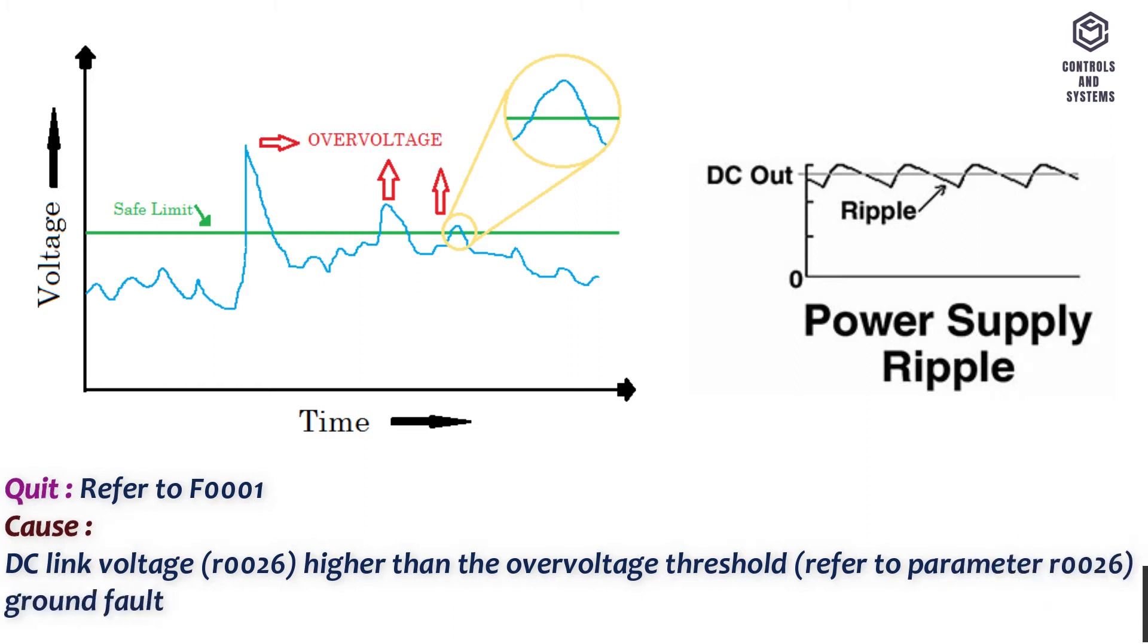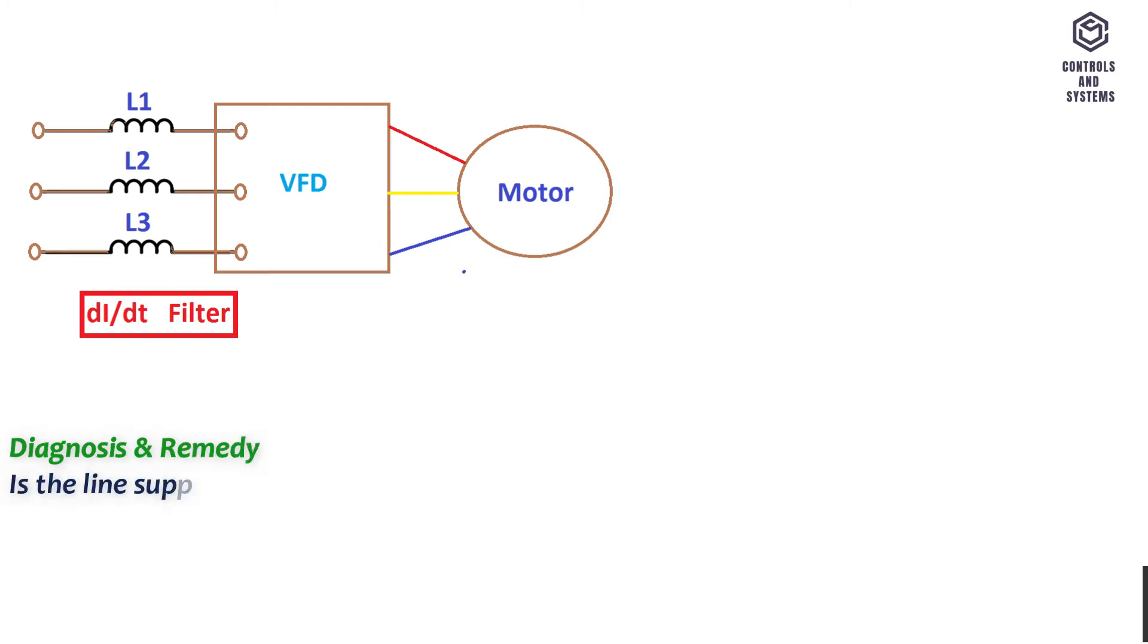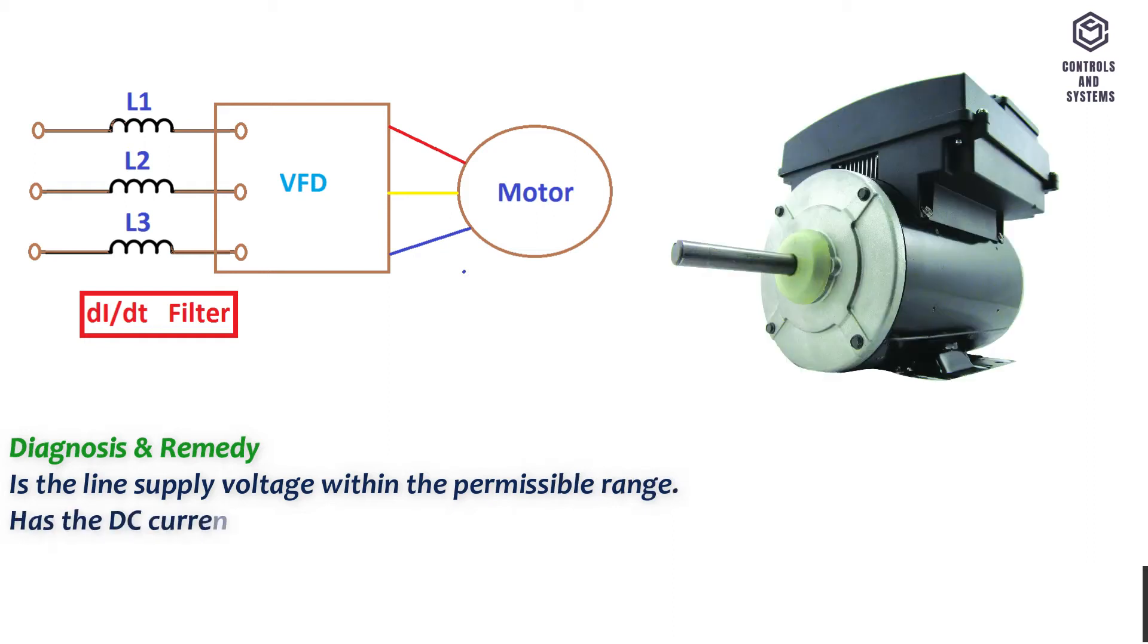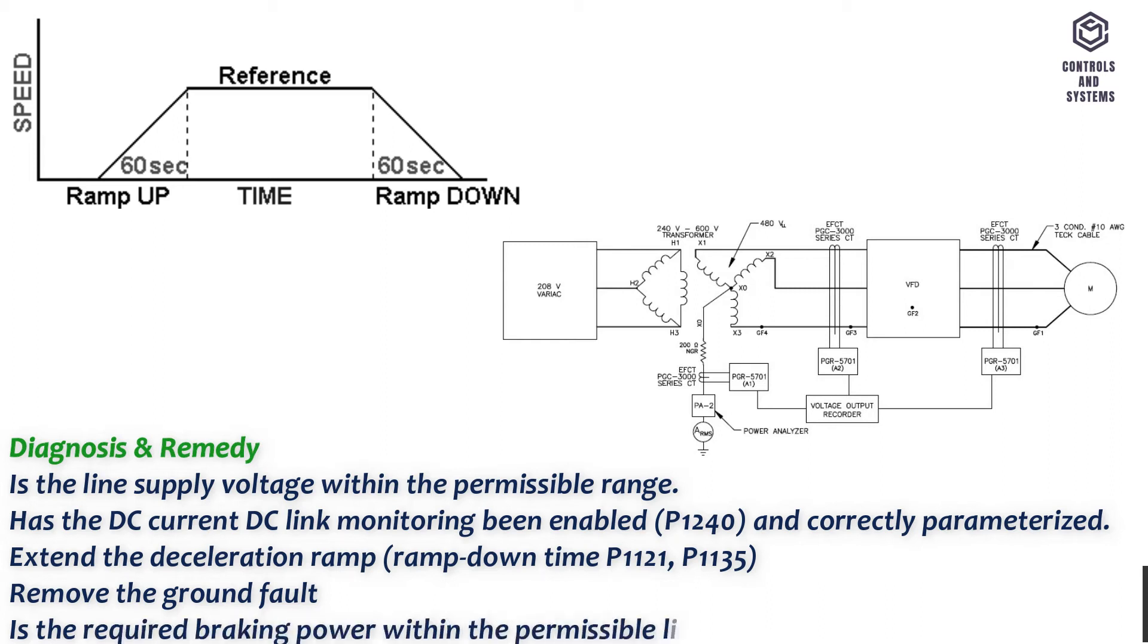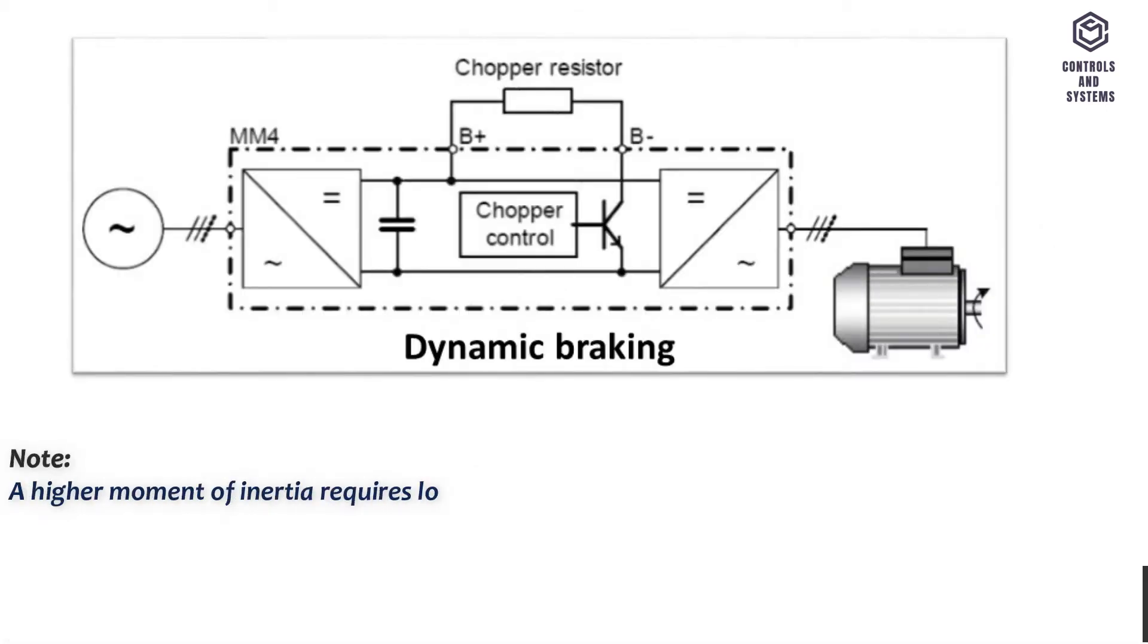Diagnosis and remedy: Is the line supply voltage within the permissible range? Has the DC link monitoring been enabled P1240 and correctly parameterized? Extend the deceleration ramp, ramp downtime P1121, P1135. Remove the ground fault. Is the required braking power within the permissible limits? Note: A higher moment of inertia requires longer deceleration times, if required, use a braking resistor.